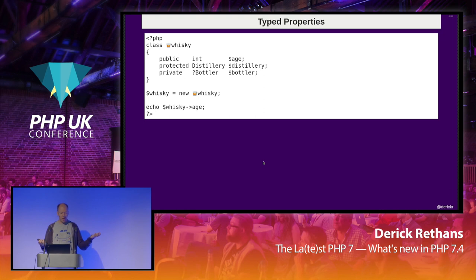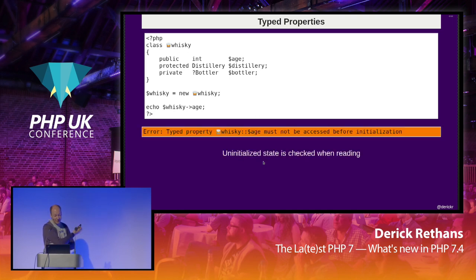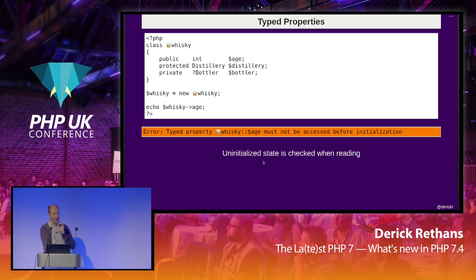How does this actually work? If we have this bit of code — again, don't use emojis in your real code — what would you guess the output is? Anyone want to shout out? An error? Yes. I heard 'uninitialized property.' Some of you have been using PHP 7.4 or reading documentation. It will give you an error message because this property hasn't been initialized yet. If it hasn't been initialized, you don't know which type it is — so PHP doesn't know what type it is. Any time you access an uninitialized property that hasn't been set to any value, you'll get an error throwable.